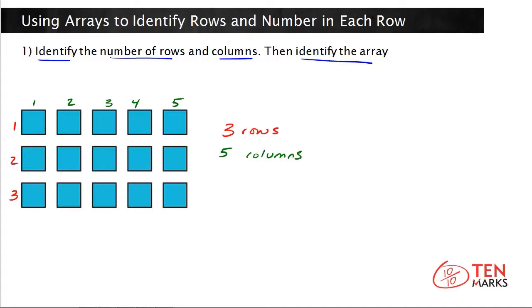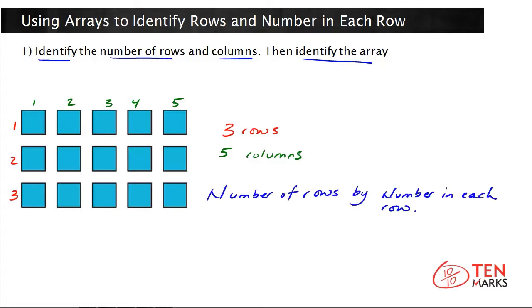Now let's identify the array. When you identify the array, you identify it by saying the number of rows by the number in each row. You found that there were three rows, so we put that in where the number of rows is, and then we have the word 'by,' and we put it by the number in each row — which is the number of columns — and here we have five columns, or five in each row, which means that this is a three by five array.